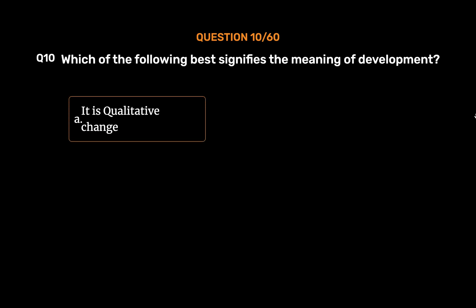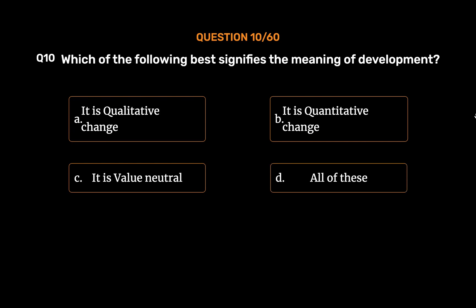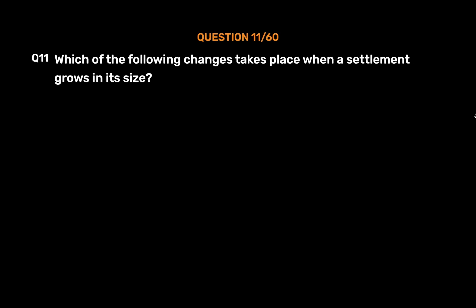Question number 10: Which of the following best signifies the meaning of development? Option A: it is qualitative change, option B: it is quantitative change, option C: it is value neutral, option D: all of these. The correct answer is option A, it is qualitative change. Development refers to changes over a period of time. Development is a qualitative change which is always value positive. Development occurs when positive growth takes place, but positive growth doesn't always lead to development.